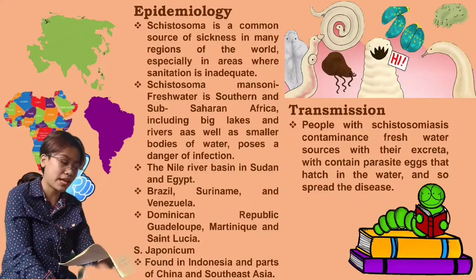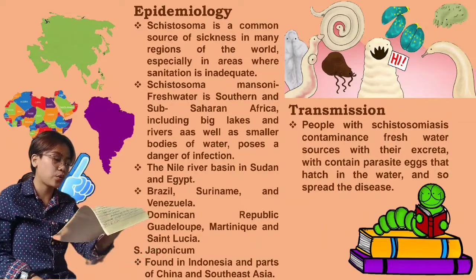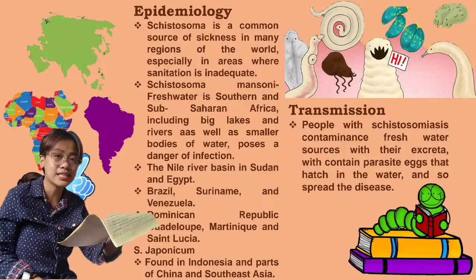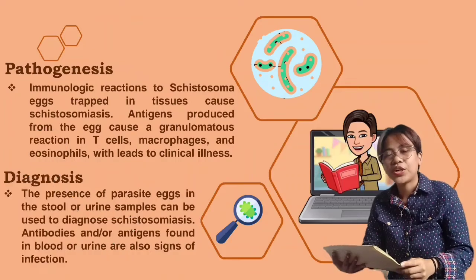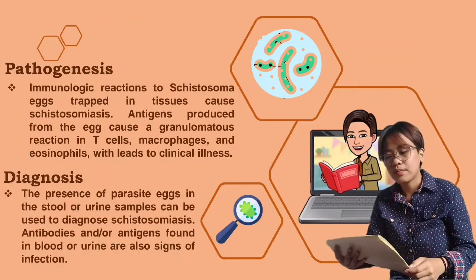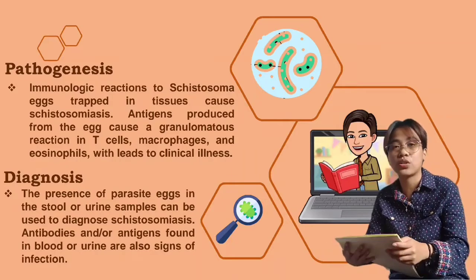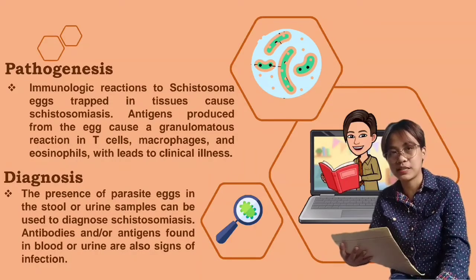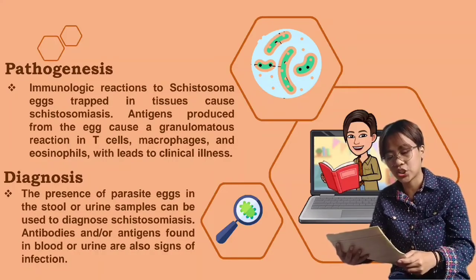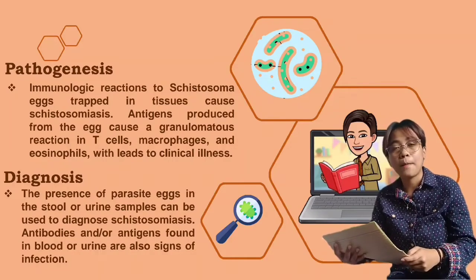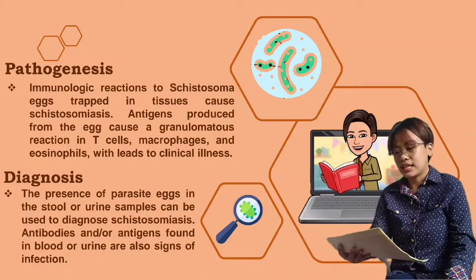For the transmission, people with schistosomiasis contaminate fresh water sources with their excreta, which contain parasite eggs that hatch in the water and spread the disease. For the pathogenesis, immunologic reactions to Schistosoma eggs trapped in tissues cause schistosomiasis. Antigens produced from the egg cause a granulomatous reaction involving T-cells, macrophages, and eosinophils, which leads to clinical illness.